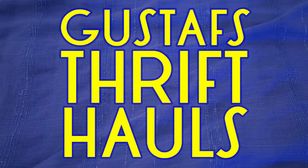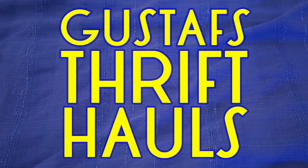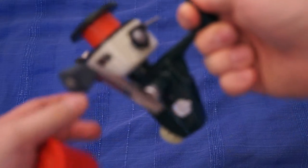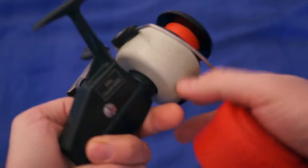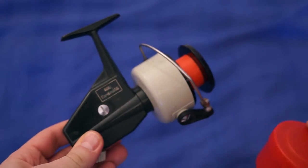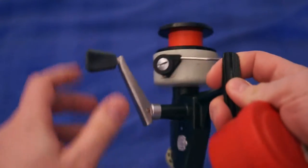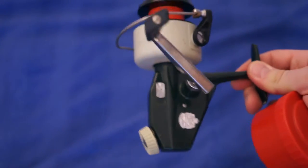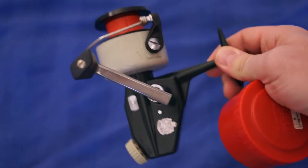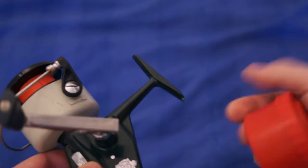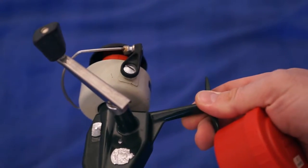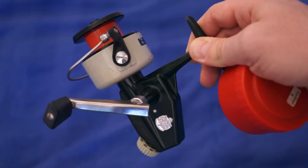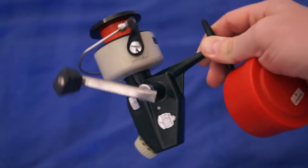This is a fishing reel from Abu Svängsta. It's a Swedish fishing reel made in the 60s I think. I bought this because I found one of these new in the box last autumn and I sold that one for like five or six hundred dollars. It was amazing.